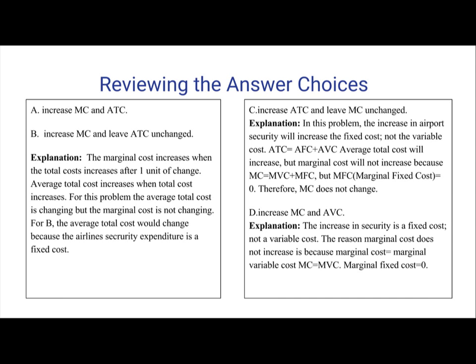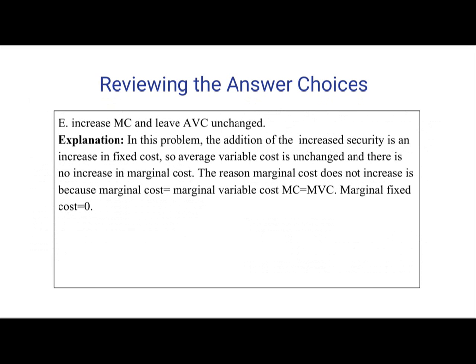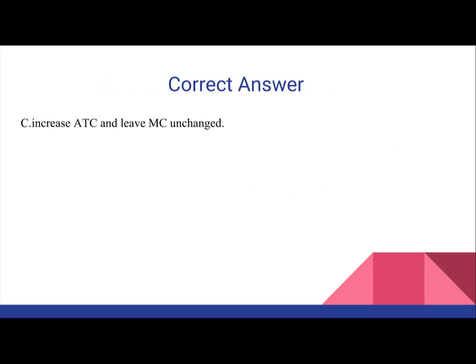Answer D — Increase MC and AVC: The increase in security cost is a fixed cost, not a variable cost. Marginal cost is not increased because MC equals marginal variable cost, and marginal fixed cost equals zero. Answer E — Increase MC and leave AVC unchanged: Since the additional security is a fixed cost, marginal cost does not increase. Therefore, the correct answer is C — Increase ATC and leave MC unchanged.